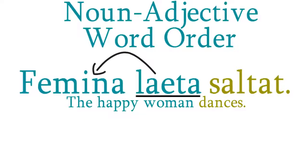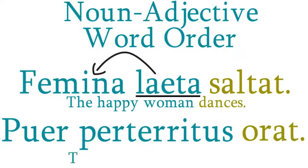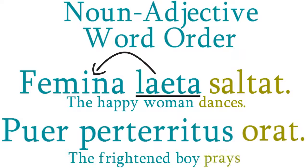As another example, this sentence means, 'The frightened boy prays.' Here, the noun puer appears before the adjective that modifies it, perteritus. Literally: the boy frightened prays.